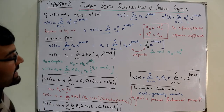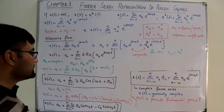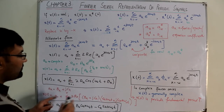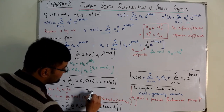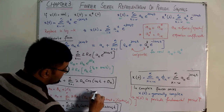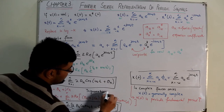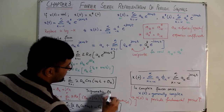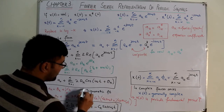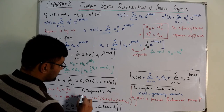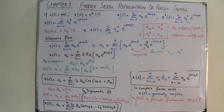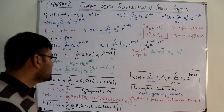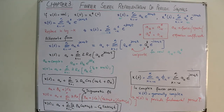The original representation Σ a_k e^(jkω₀t) is called the complex Fourier series. The forms involving sines and cosines are called the trigonometric Fourier series. These two are essentially the same representation expressed in different ways.